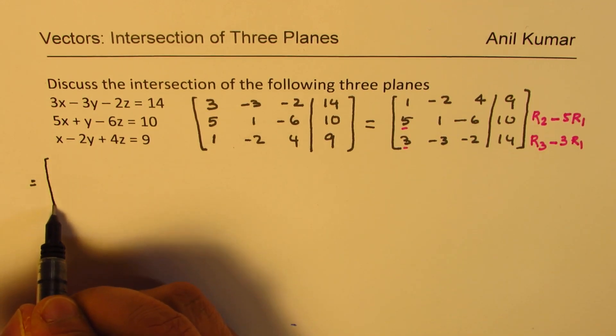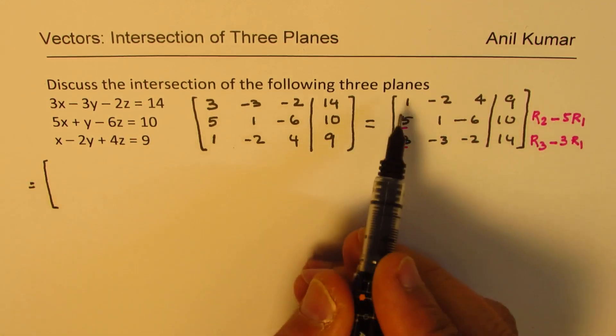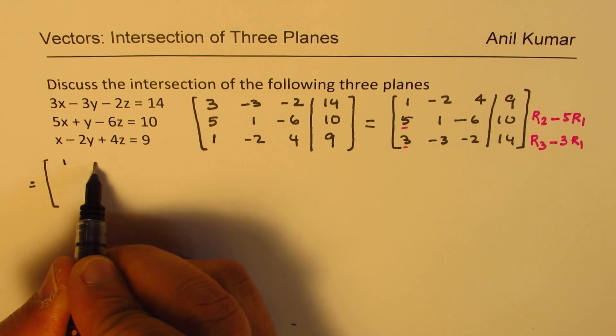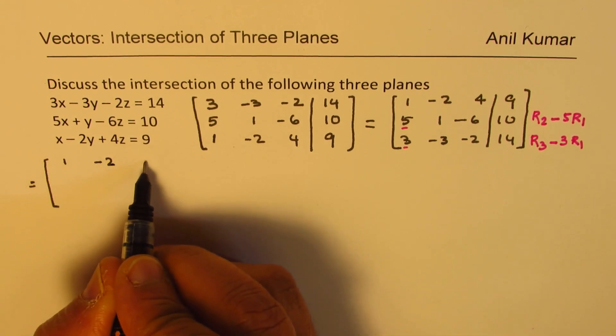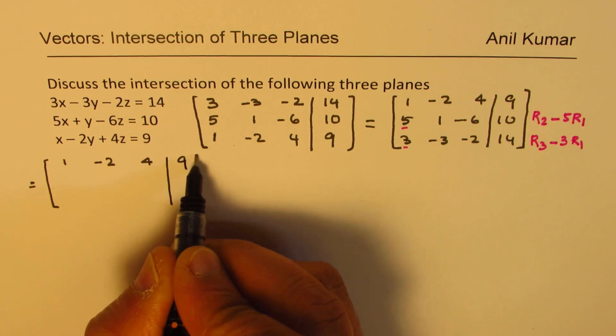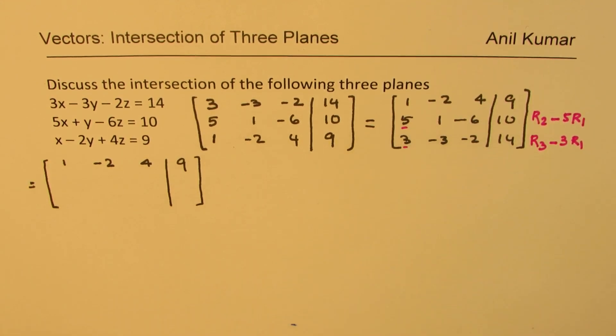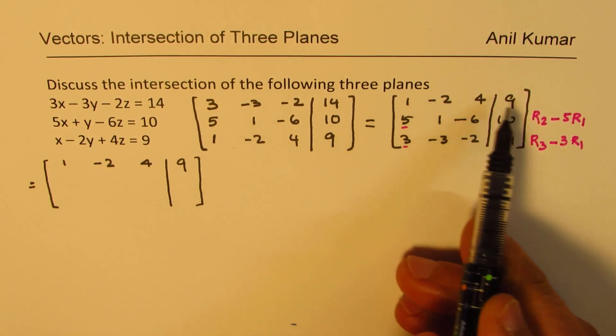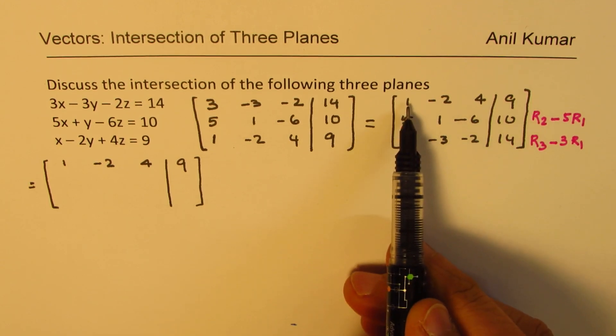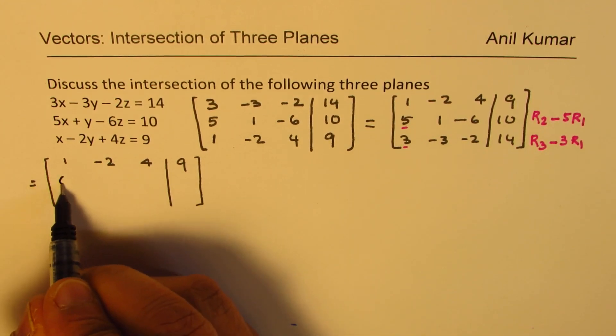So this will now become as first row remains same, which is 1, minus 2, 4, 9. The second row: if I multiply the first row by 5, I get 5 here. So 5 minus 5 is 0.